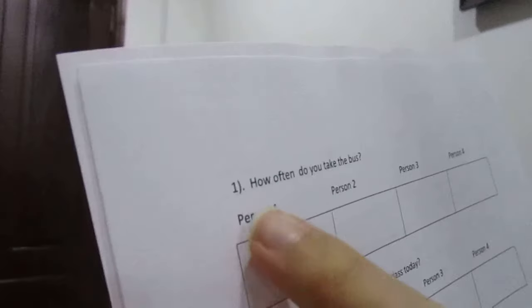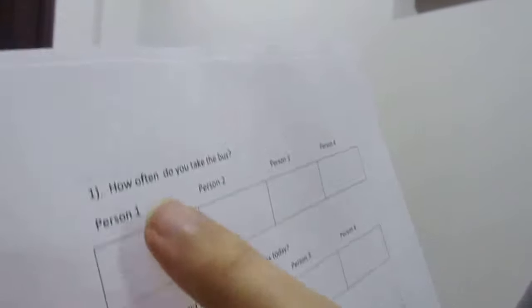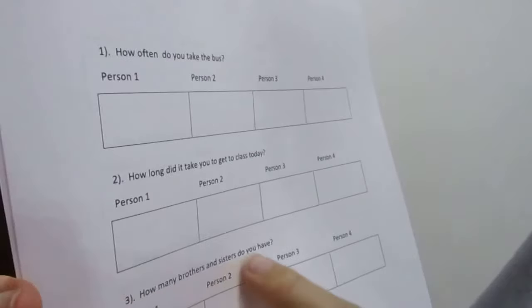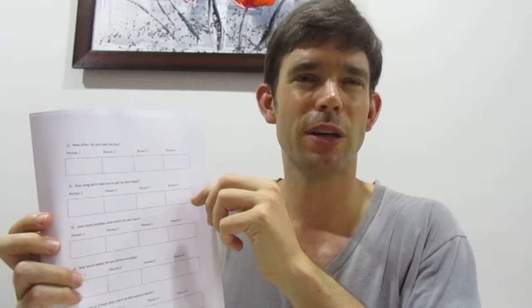Next: classroom survey. This one's a little bit boring but it works — it gets them out of their chairs. You just have a number of questions using the target language. This was a lesson on how: how often, how long, how many, how much, how far. So how often do you take the bus? How many brothers and sisters do you have? You just have to go around the room, ask four people for each question, write down their answers — just a quick little mingle activity.